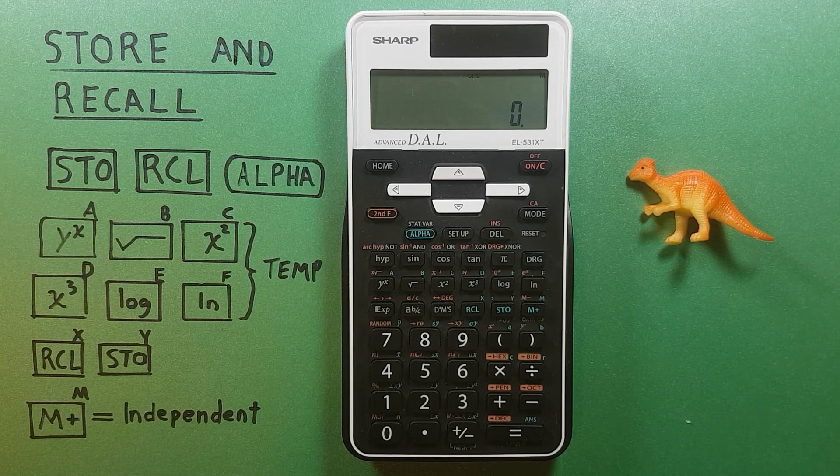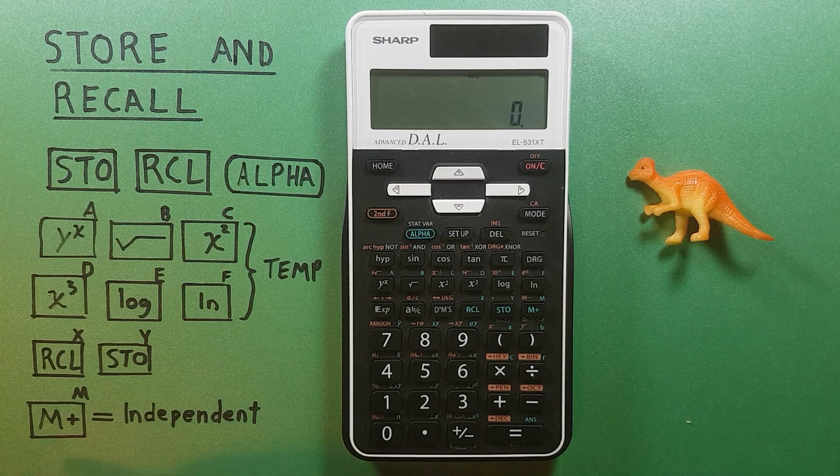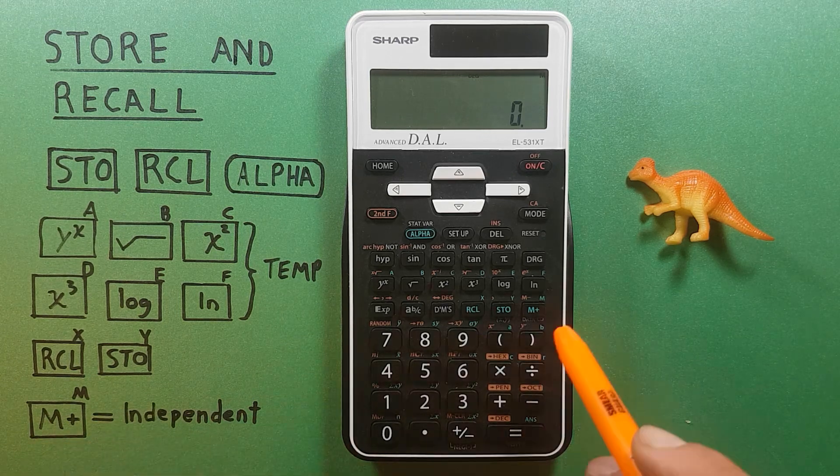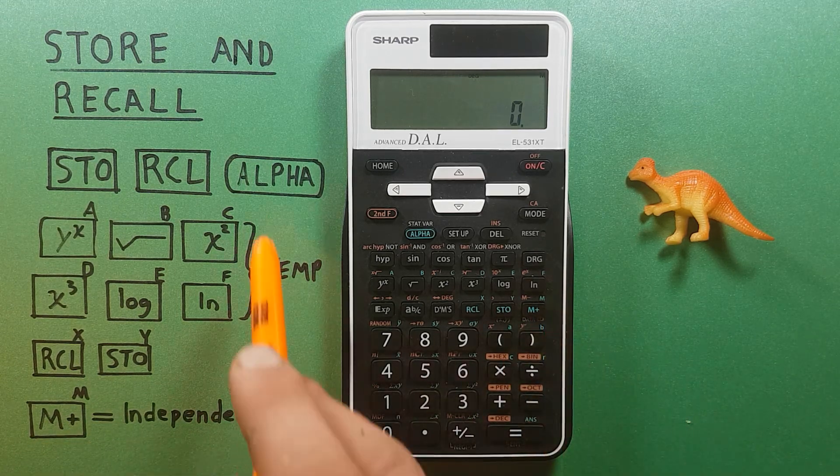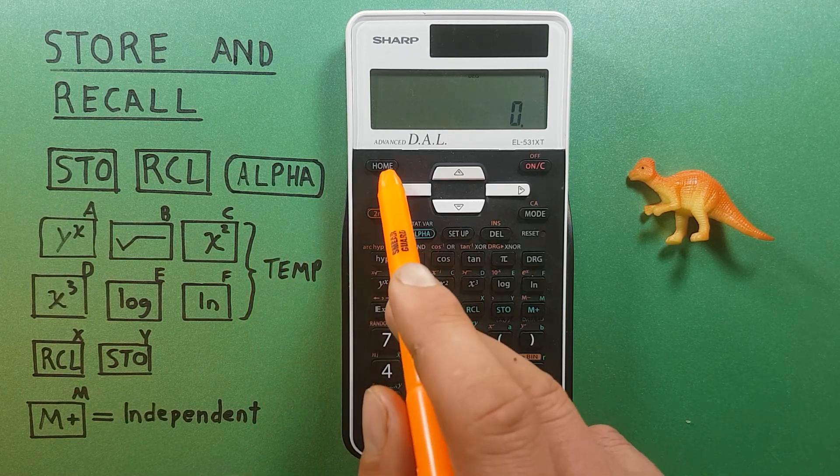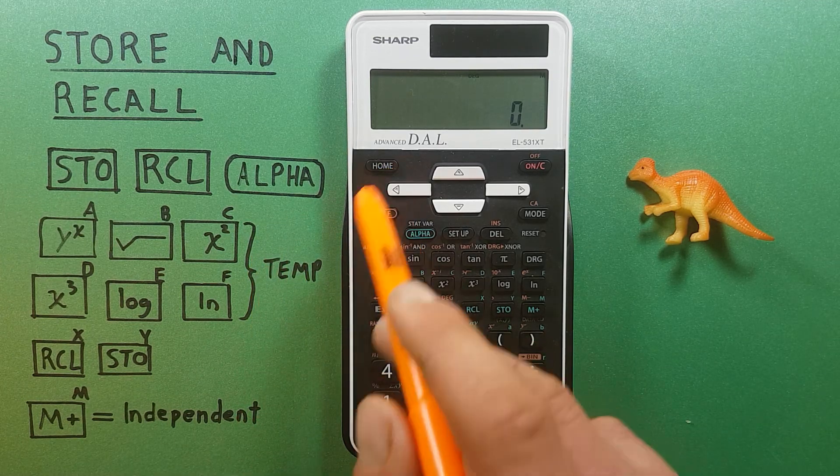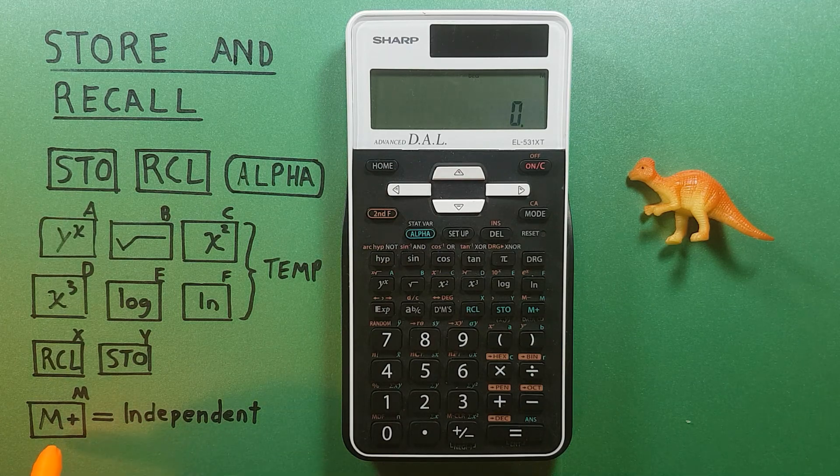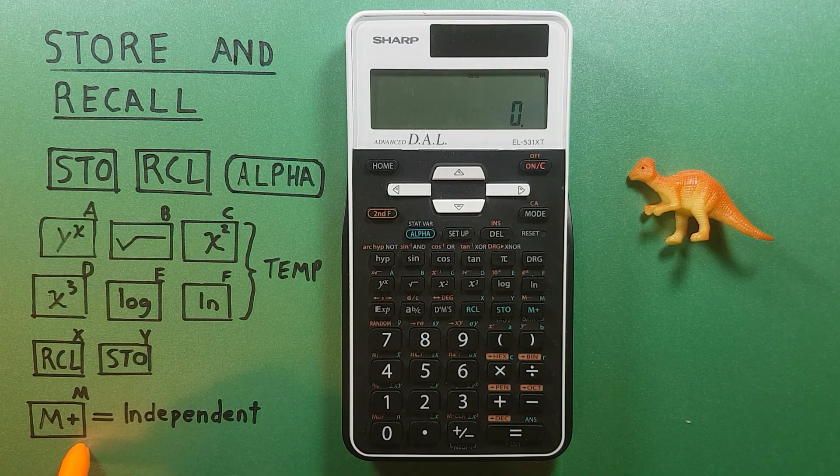It also has an independent memory slot M located here. These temporary memories can be erased by pressing the home key to clear them. When this happens, the independent memory or M memory will not be erased.